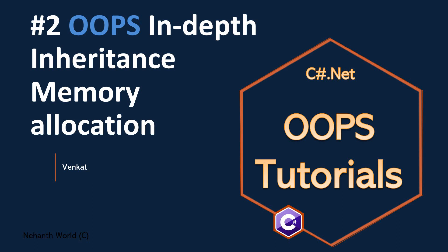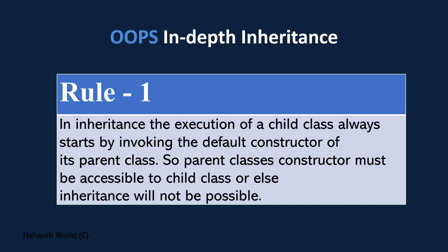Welcome to OOPS Tutorials, I am Venkat. This is Part 2, OOPS In-depth. In the previous video we discussed about inheritance rule 1, that is access modifiers. In this video we are going to discuss about the same inheritance rule 1 but about the memory allocation process. The rule 1 says: in inheritance, the execution of a child class always starts by invoking the default constructor of its parent class.